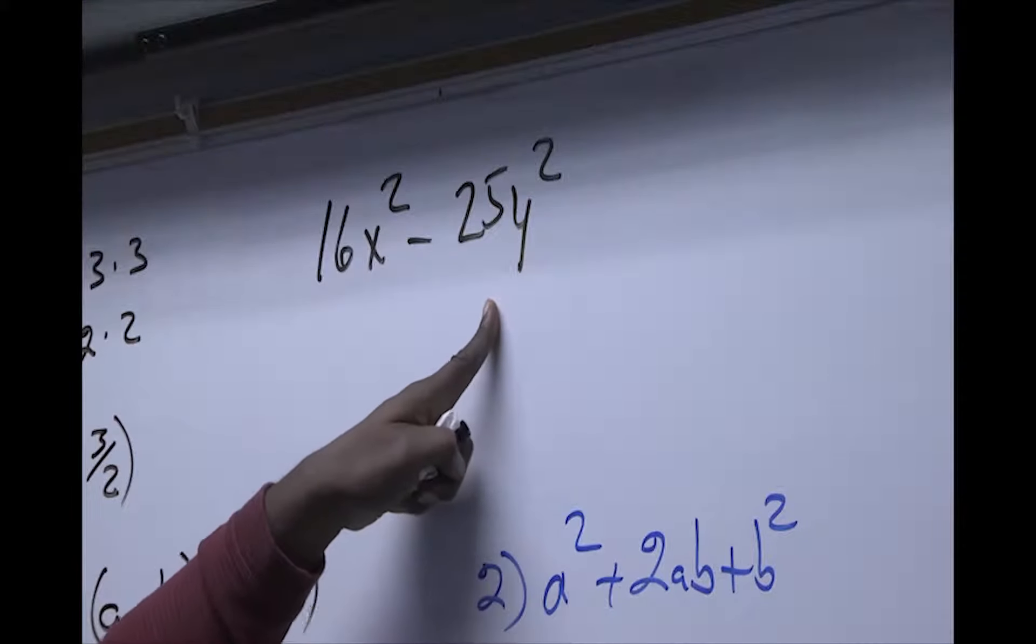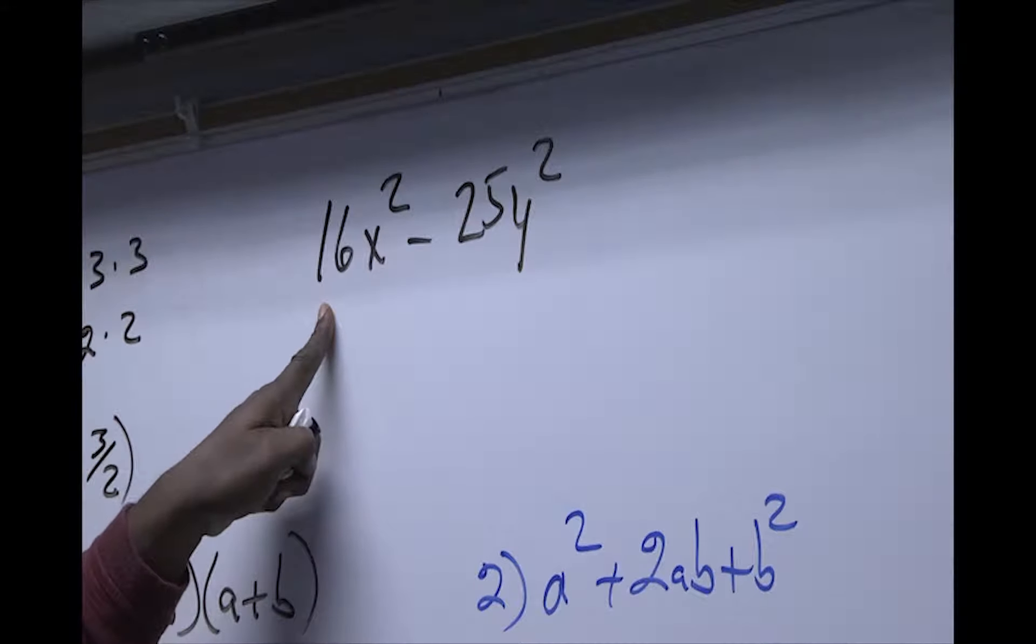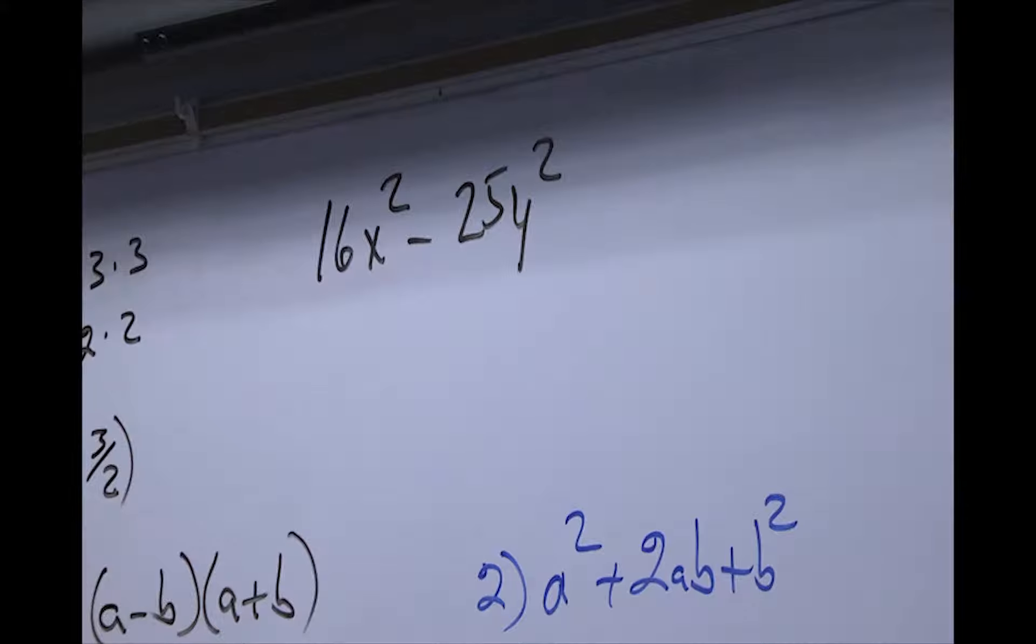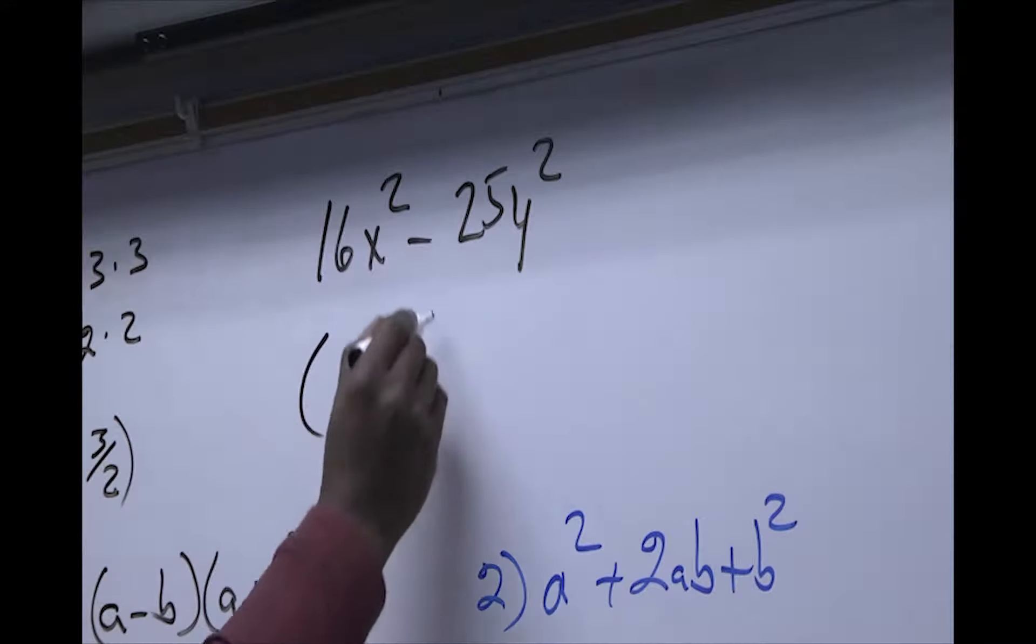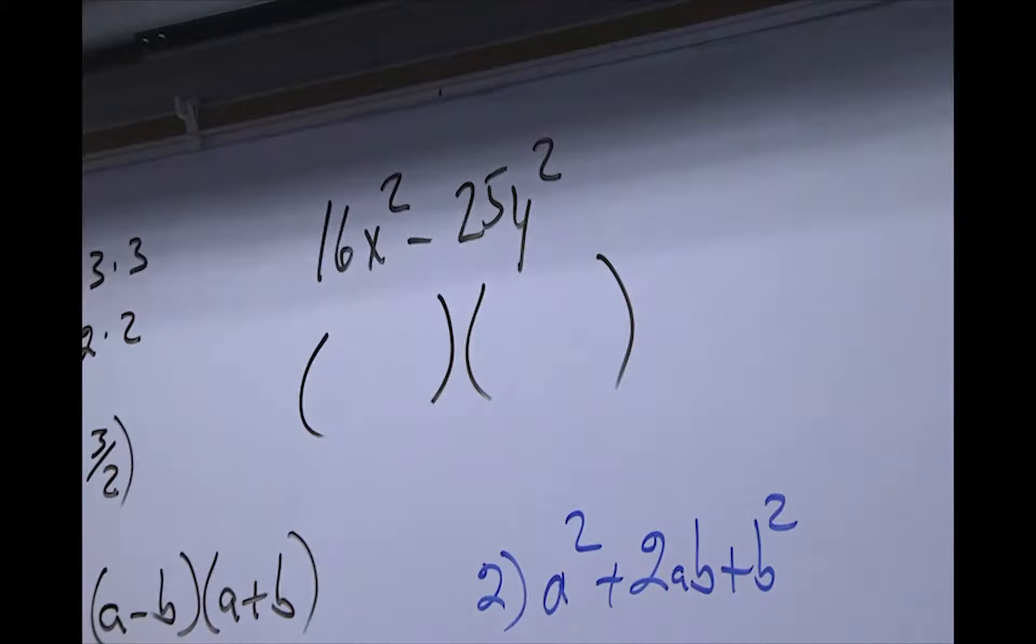You do not have a common factor here because 25 and 16 do not have anything in common. So what we are going to do is two sets of parentheses and you check and see if these are perfect squares.